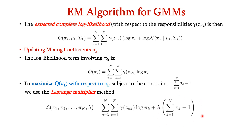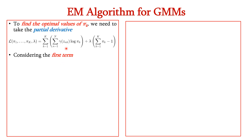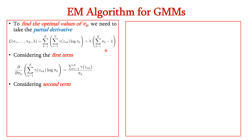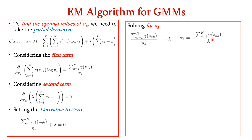To find the optimal values of πk, we take the partial derivative of the Lagrangian equation. For the first term, differentiating with respect to πk, log πk becomes 1/πk, giving summation from n=1 to N of γ(znk) / πk. For the second term, differentiating with respect to πk gives only λ. Combining these two terms and setting the derivative to zero, then solving for πk by moving λ to the right side, we get πk = −(summation from n=1 to N of γ(znk)) / λ.